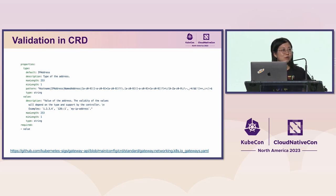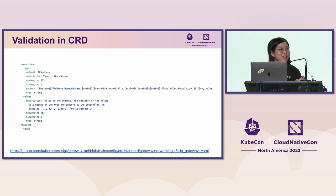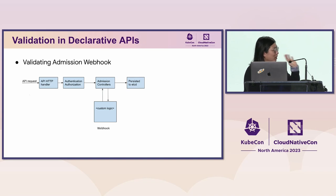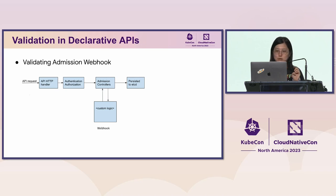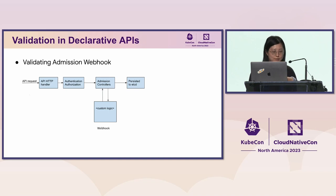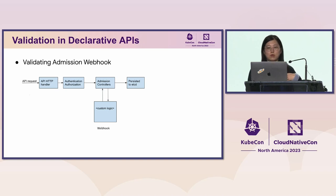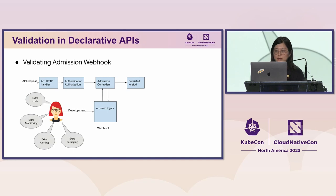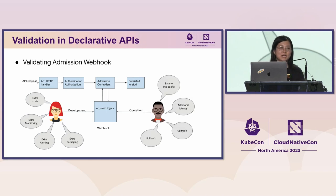A webhook is a very powerful extension point that Kubernetes upstream offers. It happens after data is authorized and authenticated, and before the data is saved in persistent storage. But it's a separate binary and component added to your system. Introducing a production-grade webhook is not only substantial development work, but also dramatically increases operational complexity — you have to think about how to package it, release it, integrate with monitoring and alerting, upgrade or roll back, latency added, and how to scale it.